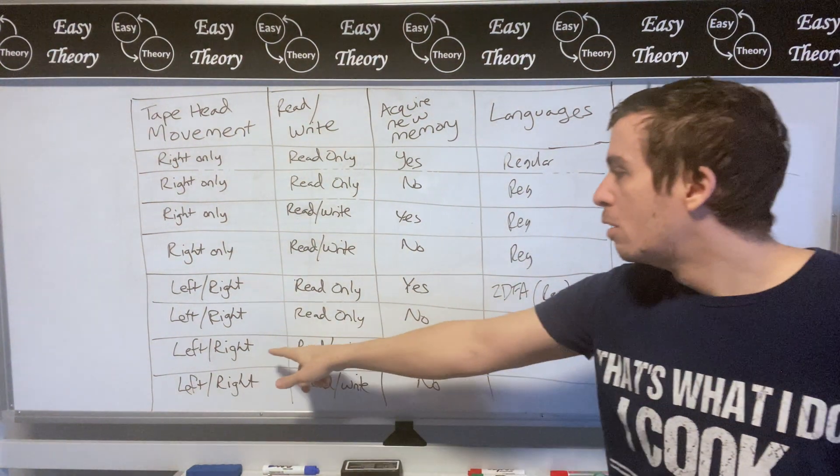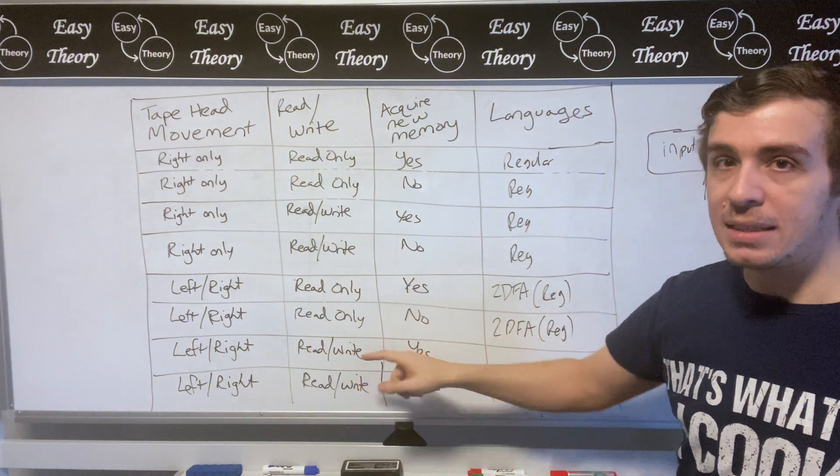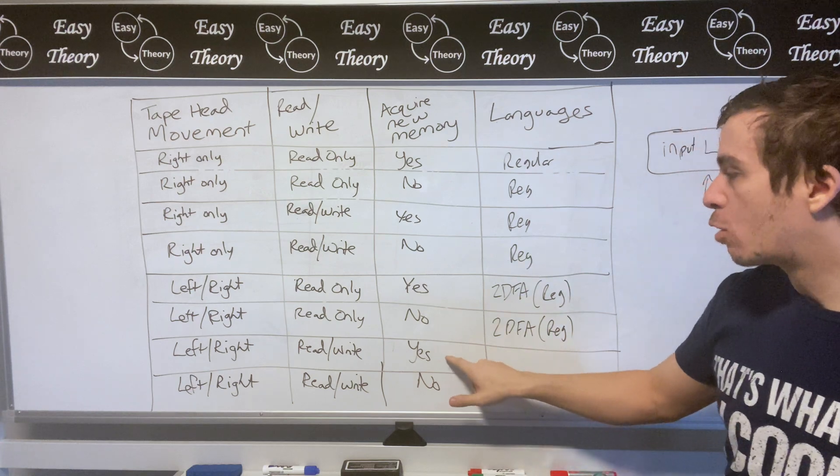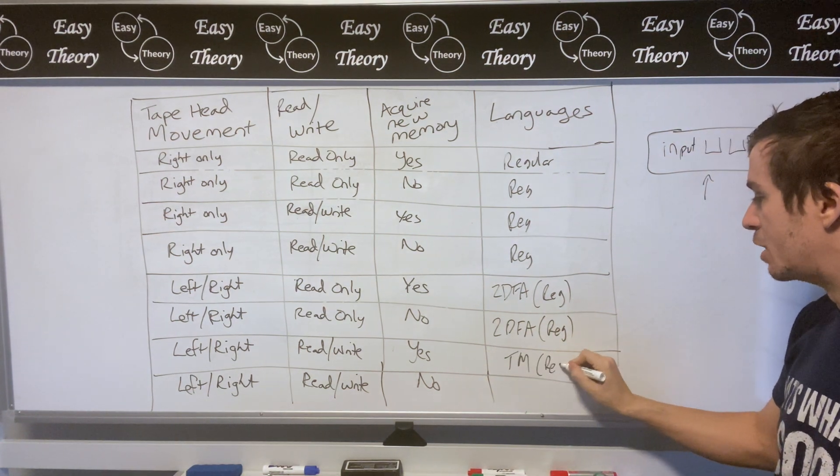So then now let's think about when we can move left and right, we can read and write cells, and we can acquire new memory. That's what a Turing machine is. And so those are the recognizable languages.